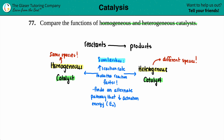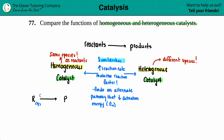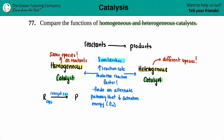A homogeneous catalyst is basically a catalyst that is the same species as your reactants. So if you have your reactants going to your products — R to P — and if your reactants are a gas, then a homogeneous catalyst has to be a gas too. They have to match. If your reactants are liquid, your catalyst has to be a liquid as well. That's what a homogeneous catalyst is: it's the same species as your reactants.